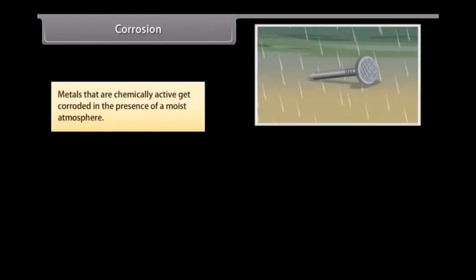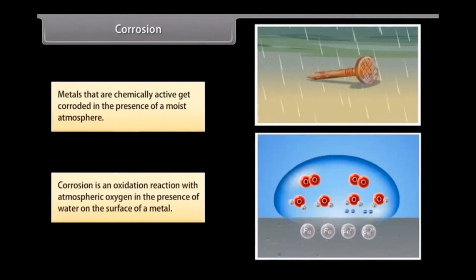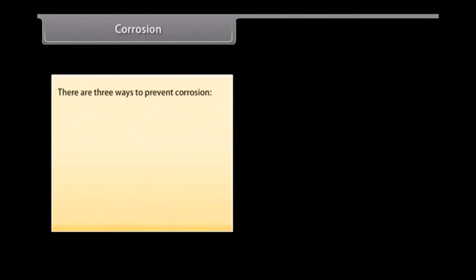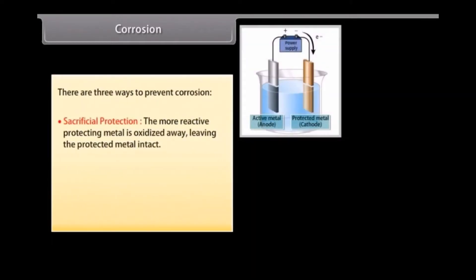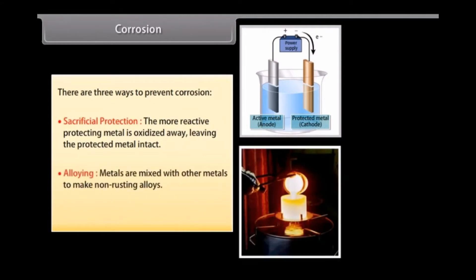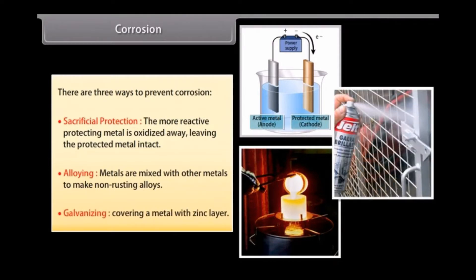Corrosion: Metals that are chemically active get corroded in the presence of a moist atmosphere. Corrosion is an oxidation reaction with atmospheric oxygen in the presence of water on the surface of a metal. For example, iron and aluminium corrode. However, non-reactive metals like gold, platinum, mercury do not corrode. There are three ways to prevent corrosion: Sacrificial protection where the more reactive protecting metal is oxidized away, leaving the protected metal intact. Alloying where metals are mixed with other metals to make non-rusting alloys. Galvanizing where a metal is covered in thin zinc layer. This layer is produced by electrolytic deposition.